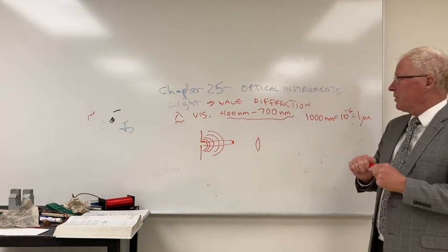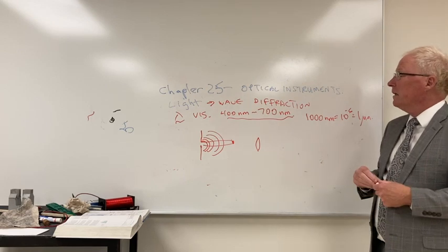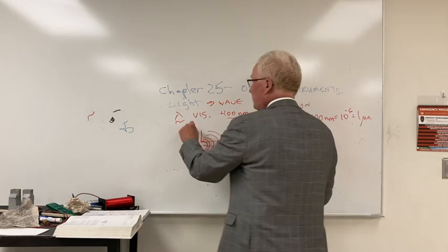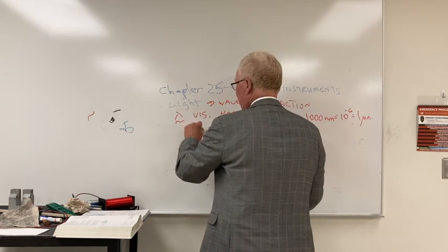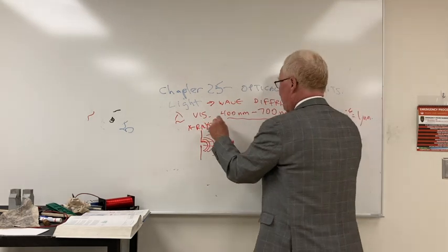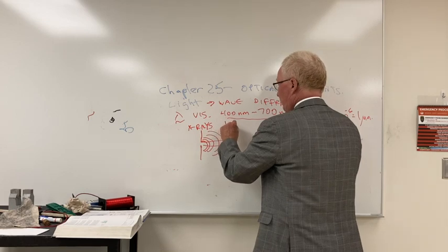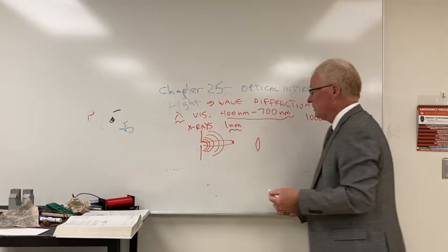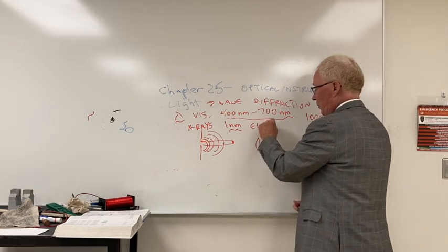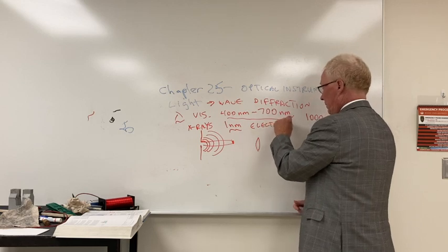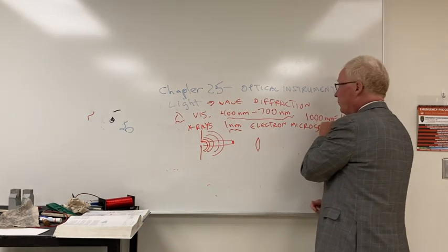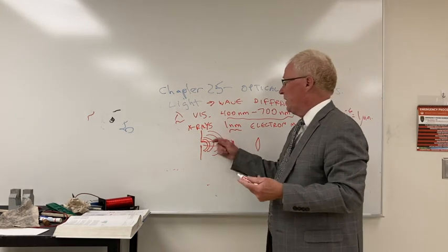If you actually want to see very small objects, like atoms, you need to go down to around x-rays, which have a wavelength on the order of one nanometer or less. And that's where you get into the electron microscope, because if you want to be able to see small things, you have to use the wavelengths associated with that.